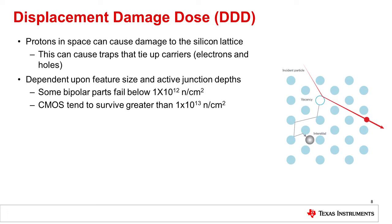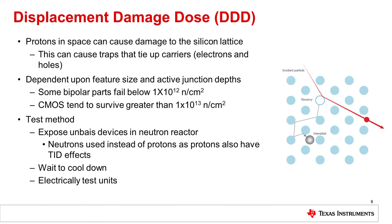Many space programs that have displacement dose requirements do not even bother to test CMOS parts. The test methodology for displacement damage is to expose units in an unbiased state in a nuclear reactor. They are irradiated and sometimes become radioactive, so it is necessary to wait for them to cool down before the parts can be electrically retested. Neutrons are used instead of protons because protons also have a total ionizing dose effect — the neutrons allow displacement damage to be separated out from TID. In some testing, a product will go through displacement damage and then be followed with total ionizing dose testing to see the cumulative effect on that single piece of silicon.